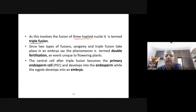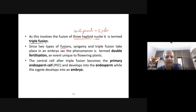In double fertilization, syngamy is the fusion of one male gamete with the egg cell, and triple fusion is the fusion of another male gamete with the two polar nuclei. Since two types of fusion — syngamy and triple fusion — take place in the embryo sac, the phenomenon is termed double fertilization and is unique to flowering plants.